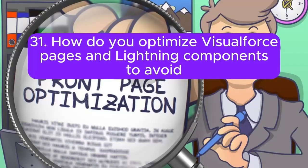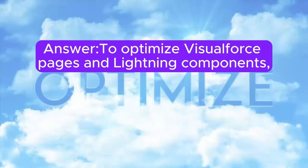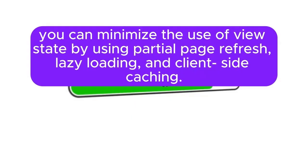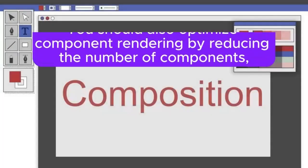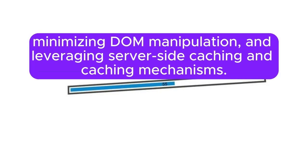Question 31: How do you optimize Visualforce pages and Lightning components to avoid hitting governor limits related to view state and rendering performance? Answer: To optimize Visualforce pages and Lightning components, you can minimize the use of view state by using partial page refresh, lazy loading, and client-side caching. You should also optimize component rendering by reducing the number of components, minimizing DOM manipulation, and leveraging server-side caching mechanisms.